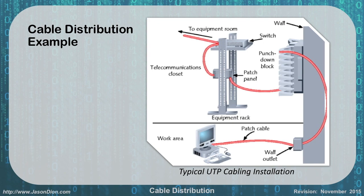Here's an example of what a cable distribution would look like. We start with our work area: a PC connected with a patch cable — a straight-through — going to a wall jack, RJ45. The back side of that looks like a patch panel; it's a punch-down block for that singular jack, running the cable through the wall into a punch-down block. That punch-down block is then punched down into the patch panel, and the front of the patch panel has an RJ45 that goes into the RJ45 port of a switch, providing us the ability to change on the fly as needed.